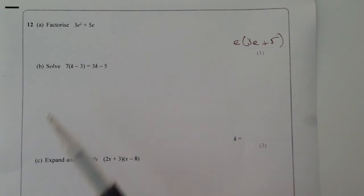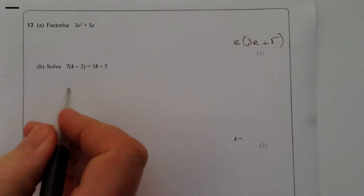Now, where we've got brackets, we really need to multiply out the brackets, and then we're solving, in other words, we're finding the value of k in this particular equation.